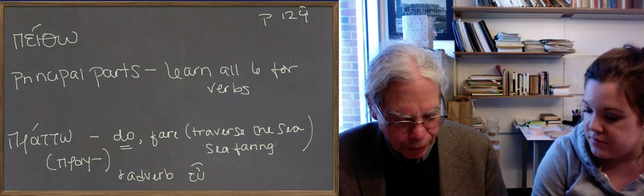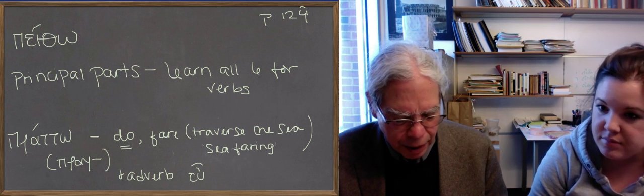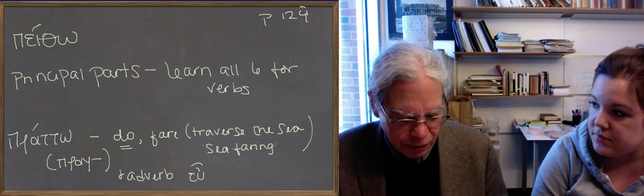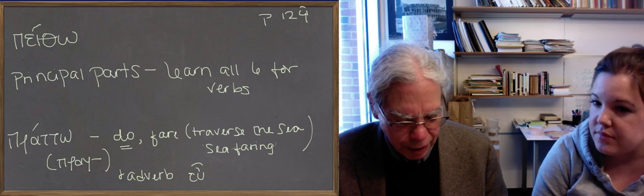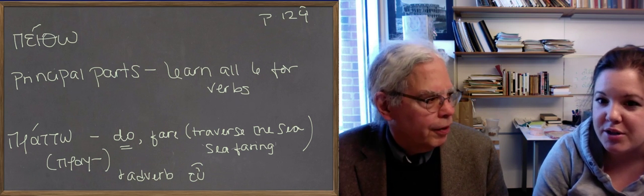πέπραχα, so you've aspirated the gamma to a χ, as we've seen in other cases. Or πέπραγα, without the aspiration. When you have two, they change in function. And one's transitive, πέπραχα, and the other's intransitive, πέπραγα. That's the meaning fare, it's intransitive. Which means it takes a direct object.